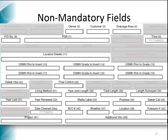The fields shown in black represent the current non-mandatory fields. Examples of these fields are field 9, time; field 27, lining method; field 29, total length; or field 37, weather.